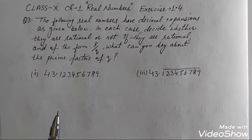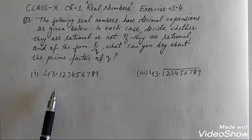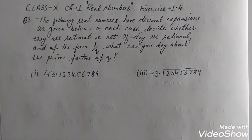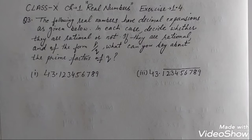We have to tell, just by looking at the decimal expansion, whether these are rational or irrational. When the decimal expansion is either terminating or non-terminating repeating, it shows a rational number. When the decimal expansion is non-terminating non-repeating, it shows an irrational number.